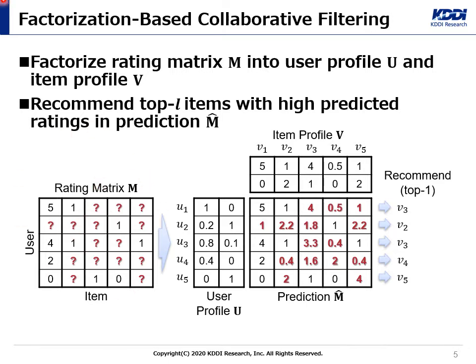This is an instance of a rating matrix. Each entry represents a rating of an item by the user. In the initial training phase, the rating matrix is factorized into a user profile U and an item profile B. The observed entries are predicted by multiplying the user profile and the item profile. As a result, a prediction M-hat of the rating matrix is generated. In the recommendation phase, the system recommends new items that each user is potentially interested in based on the prediction M-hat. One of the most natural recommendation methods is to recommend the top L items with high predicted ratings among unobserved items.